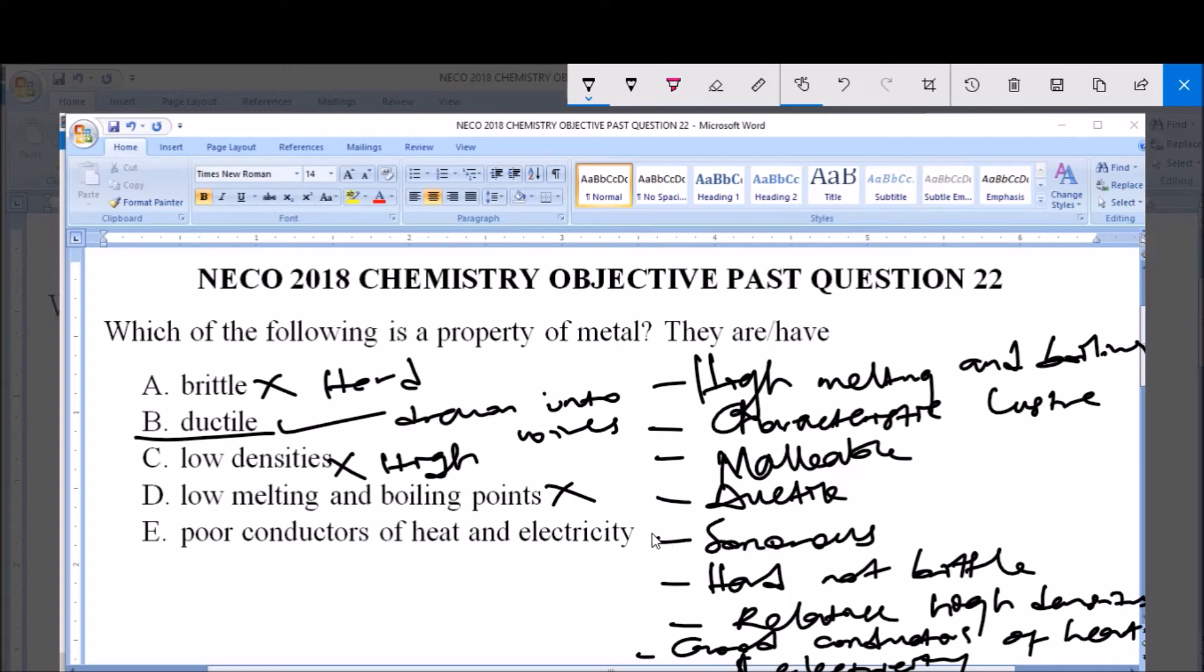And E says poor conductors of heat and electricity, which is wrong. Metals are good conductors of heat and electricity.